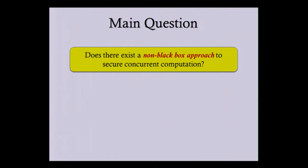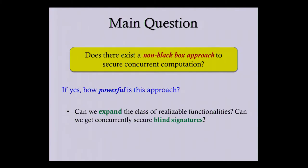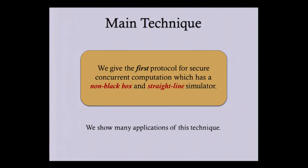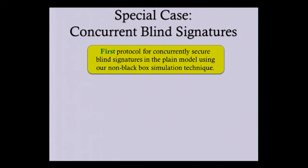So the next question is: how powerful is this approach? What can we do with it? Can we expand the class of realizable functionalities, get concurrent blind signatures, or get better protocols for functionalities we already know? The main technical contribution of our work is we give the first protocol for concurrent secure computation which has a straight-line non-black-box simulator, and this technique helps us get a host of new results.